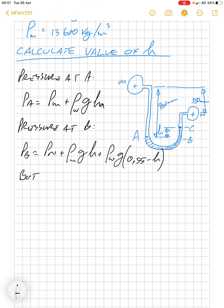But we also know that the pressure at A must be equal to the pressure at B because they are at the same height. Therefore,